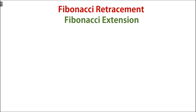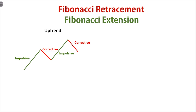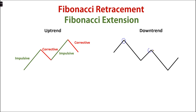Retracement and extension depend a lot on context, so let us lay out some groundwork first. On an uptrend, we have prices making higher highs and higher lows. We also have the impulsive wave trending up and the corrective wave trending down. And on a downtrend, everything happens in reverse — prices make lower highs and lower lows, with the impulsive wave trending downwards and the corrective wave trending upwards.